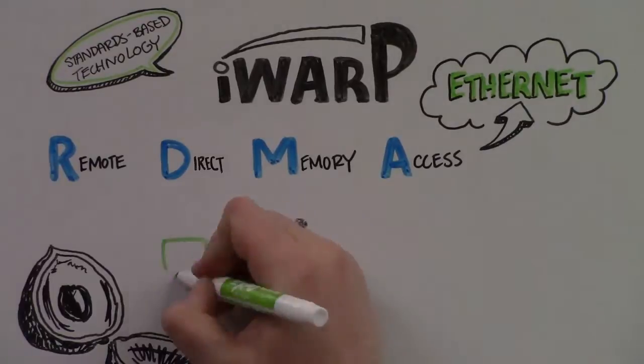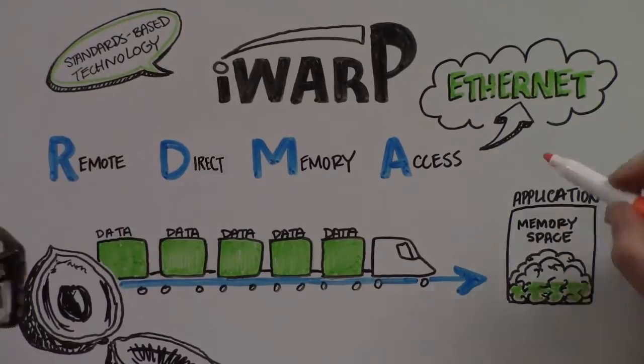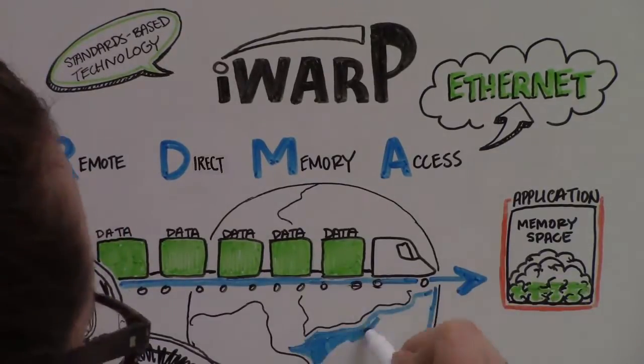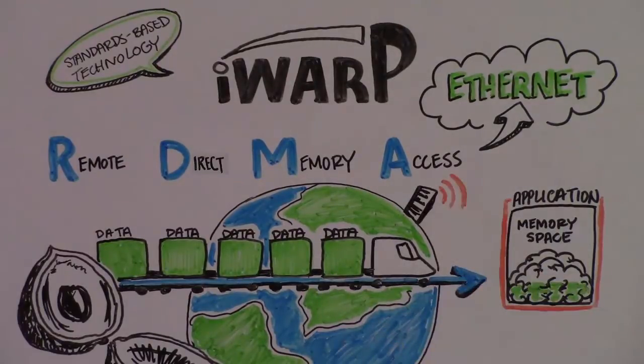In a nutshell, RDMA allows an application to place a block of data directly in the memory space of another application in a very efficient manner. The destination can be an application in a virtual machine in a different server anywhere in the world.